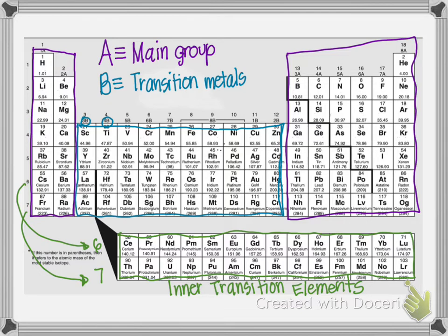This is another way of categorizing and putting into large blocks the different elements. To recap: we refer to the columns as groups and the rows as periods. The main group elements have the tall columns with A as part of their group number. The short groups are the transition metals with B in their group number. The inner transition elements are the ones on the bottom pulled out from the center of the transition metals.